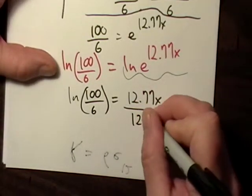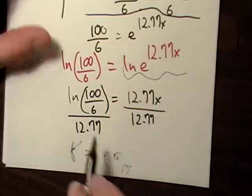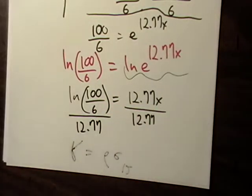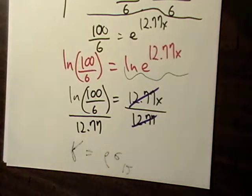So natural log of one hundred divided by six is equal to this 12.77X. So let's divide both sides by 12.77. Now we're just back to regular algebra. It just looks a little weird over here because we got fractions and logarithms and all this business. But that cancels out.